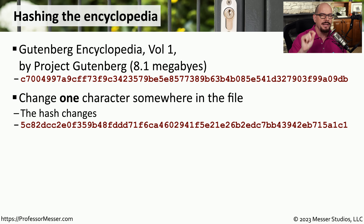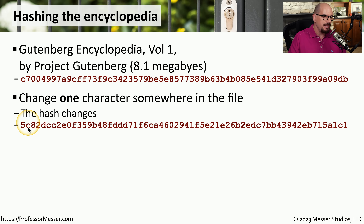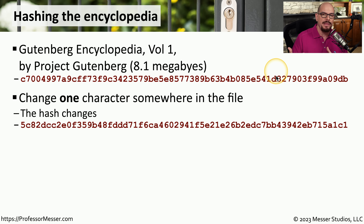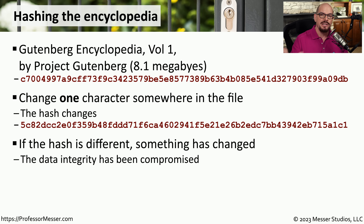If I were to change one character inside of that file anywhere, although the size of the file is exactly the same after making the change, somewhere in that haystack of data there is a difference. It would be very difficult for a human to read through all 8.1 megabytes of text and determine where that individual change might be. But if you perform a hash of the changed data, the hash value created is very different from the original. So by performing my own hash and comparing it to the original, I can see that something has changed. At that point, we might download again or perform a diff between the two files to find exactly where the change occurred.